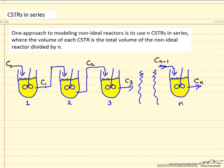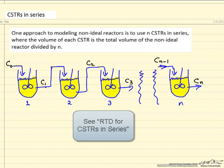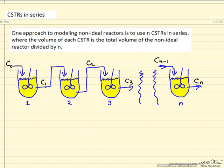We can use residence time distribution measurements to determine the value of n so that the residence time distribution from a number of CSTRs in series, which is calculated in a different video, matches the residence time distribution of the non-ideal reactor.